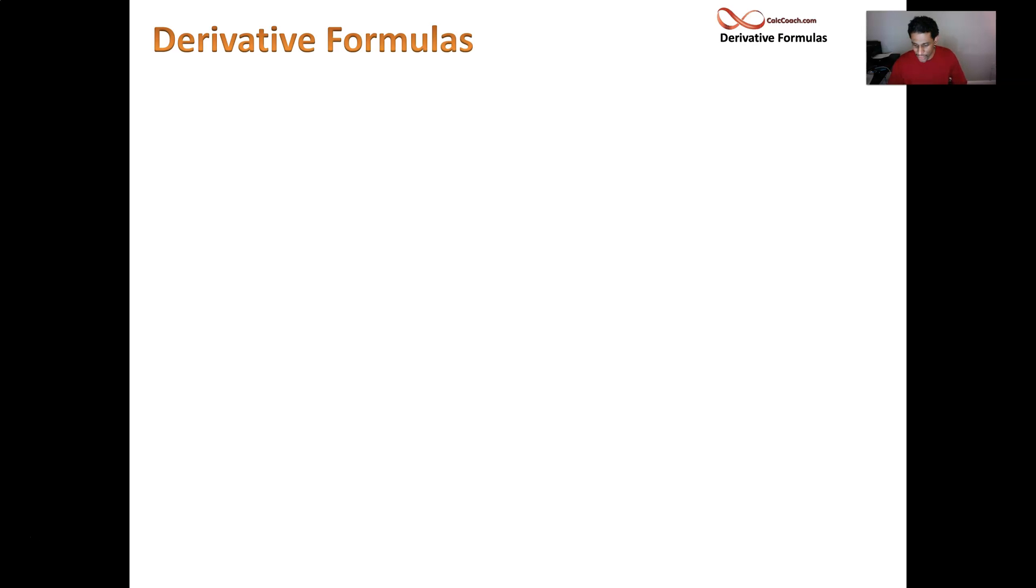Let's get started. So first up, we want to be able to not have to go through all the work of using the limit definition. So let's lay down some ground rules. Say we have two functions, f of x and g of x, and they're differentiable. And let k be some constant. The following rules apply.